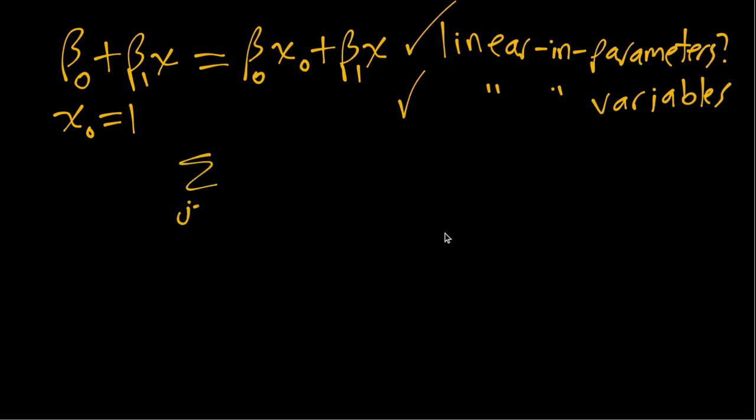it thinks about functions with this form of all the parameters beta times different functions of x, where the functions can be very nonlinear but because it has this overall structure it's linear in parameters. Basically the f_j are the linear combination weights in this linear combination of the beta j.